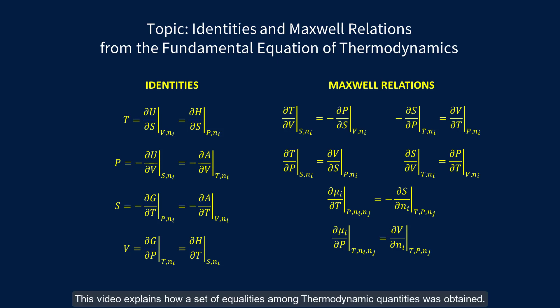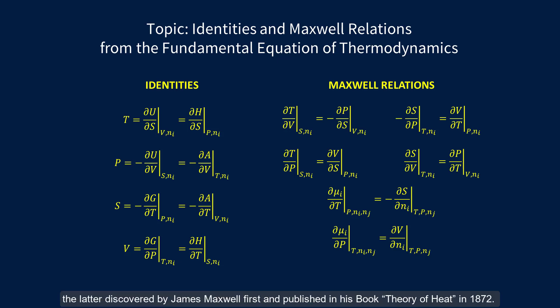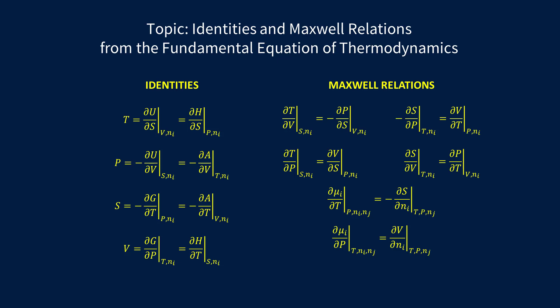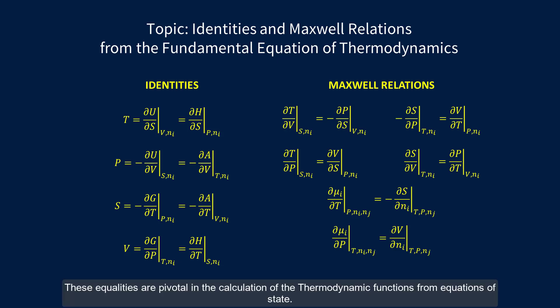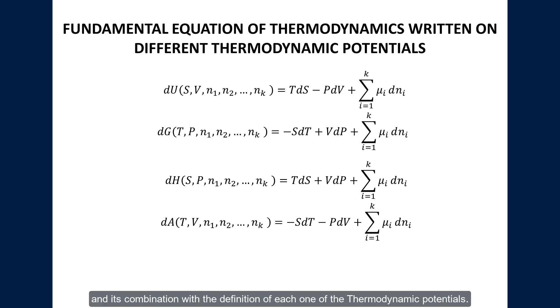This video explains how a set of equalities among thermodynamic quantities was obtained. The equalities are usually classified in two groups: identities and Maxwell relations, the latter discovered by James Maxwell first and published in his book Theory of Heat in 1872. These equalities are pivotal in the calculation of the thermodynamic functions from equations of state. Both sets of equalities originate from the fundamental equation of thermodynamics and its combination with the definition of each one of the thermodynamic potentials.